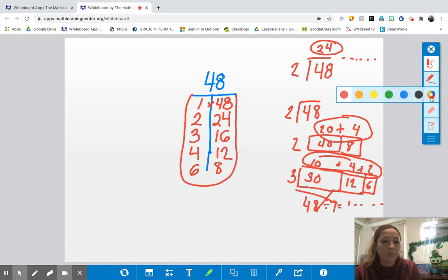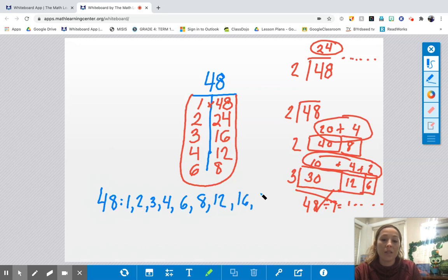Excuse me. So the factors of 48 are 1, 2, 3, 4, 6, 8, 12, 16, 24, and 48. And that's how you find factors.